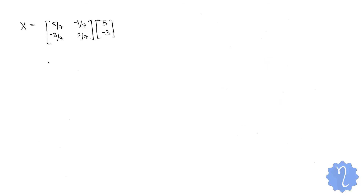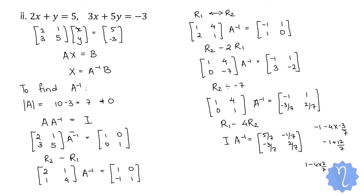Now we find X = A⁻¹ · B. Multiplying: (5/7)(5) + (−1/7)(−3) = 25/7 + 3/7 = 28/7 = 4; (−3/7)(5) + (2/7)(−3) = −15/7 − 6/7 = −21/7 = −3. So x = 4, y = −3. You can substitute back to verify the answer is correct. We will use the adjoint method going forward.